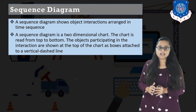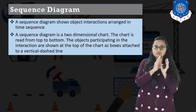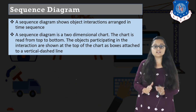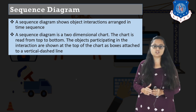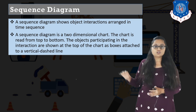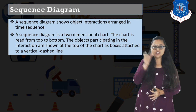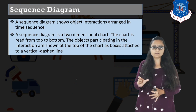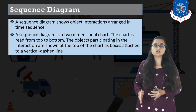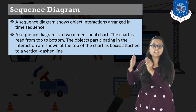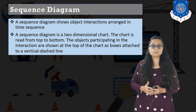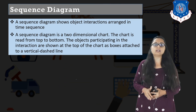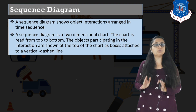A sequence diagram is basically a two-dimensional chart, and this chart is read from top-left to right-bottom. The objects participating in the interaction are shown at the top of the chart. There will be boxes depicting the objects which are interacting with each other, and there will be a vertical dashed line associated with every object in your sequence diagram, which indicates the overall lifetime of the object.